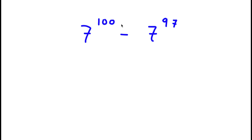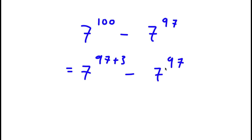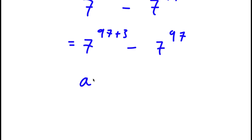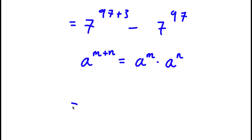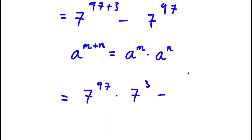Alright, so I have the problem 7 to the power of 100 minus 7 to the power of 97. I want to calculate this without a calculator. To solve this, I'm going to rewrite 7 to the power of 100 as 7 to the power of 97 plus 3. Using the rule a to the power of m plus n equals a to the power of m times a to the power of n, 7 to the power of 97 plus 3 equals 7 to the power of 97 times 7 to the power of 3, minus 7 to the power of 97.